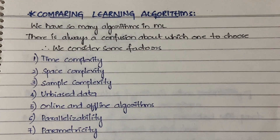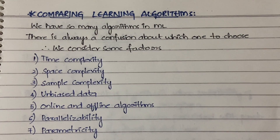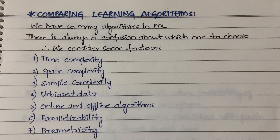As I said, we consider some factors while choosing an algorithm. When we are comparing two algorithms or more than two algorithms, what are the factors that we take into consideration? The first is time complexity.